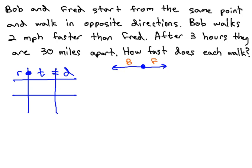We're told that Bob walks 2 miles per hour faster than Fred, and after 3 hours they are 30 miles apart. After the 3 hours are over, the total distance between them is 30 miles.